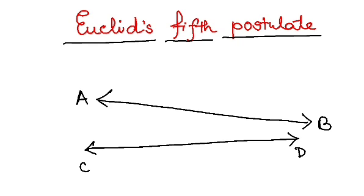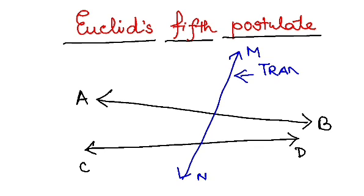And if I drop another straight line here like this, let's say MN. So I think you people know this one, this is called the transversal, right? So we have the transversal here.